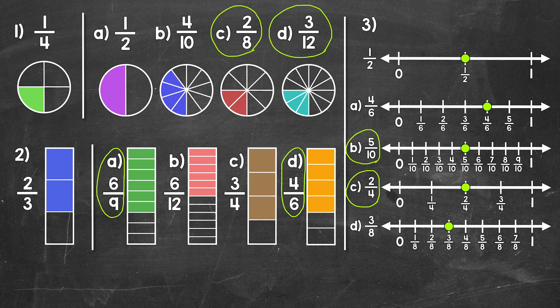Let's start with number one. We should have C, two-eighths, and D, three-twelfths. Those fractions are equivalent to one-fourth. Moving on to number two, we should have A, six-ninths, and D, four-sixths. Those fractions are equivalent to two-thirds. And lastly, number three, we should have B, five-tenths, and C, two-fourths. Those fractions are equivalent to one-half.